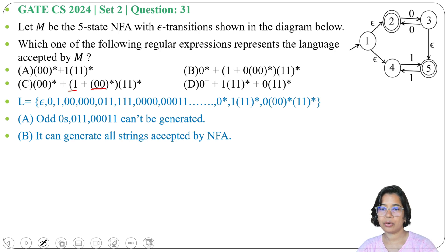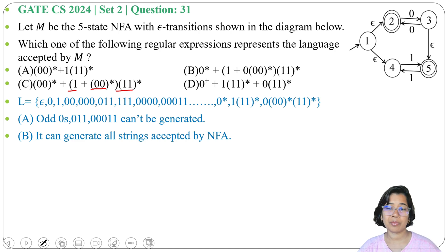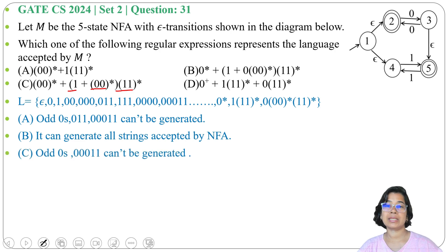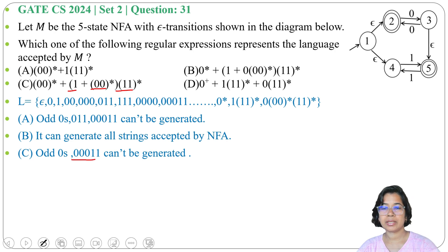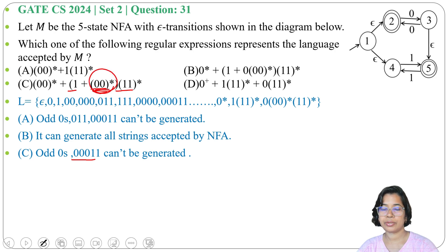Next, check option C: (0 0 0) whole Kleene closure plus 1 plus (0 0) whole Kleene closure then (1 1) whole Kleene closure. It's the same as option A — it will generate even number of 0s, it cannot generate odd number of 0s. That's why option C is not the regular expression for this epsilon NFA. Even it cannot generate three 0s followed by two 1s — three 0s cannot be generated from this; you can only generate even number of 0s.